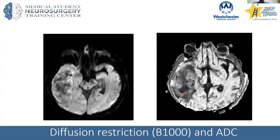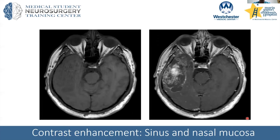Infection also appears bright on diffusion restriction. Importantly, always check the ADC — the converse of diffusion restriction. A true lesion will be bright on diffusion restriction and dark on ADC. If a lesion is bright on both, that suggests T2 shine-through, where a very bright lesion gives a false diffusion signal.